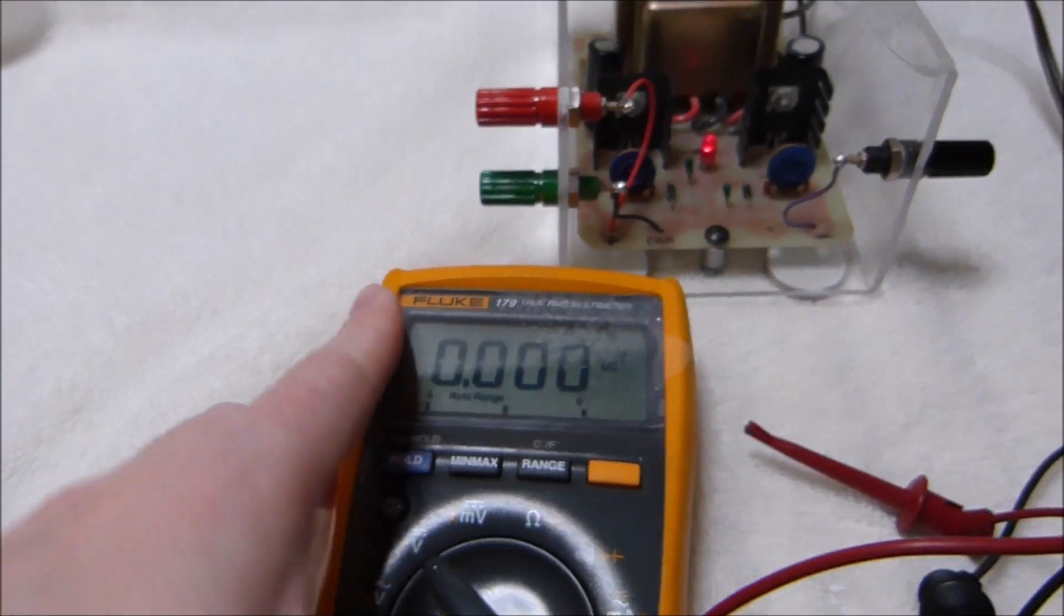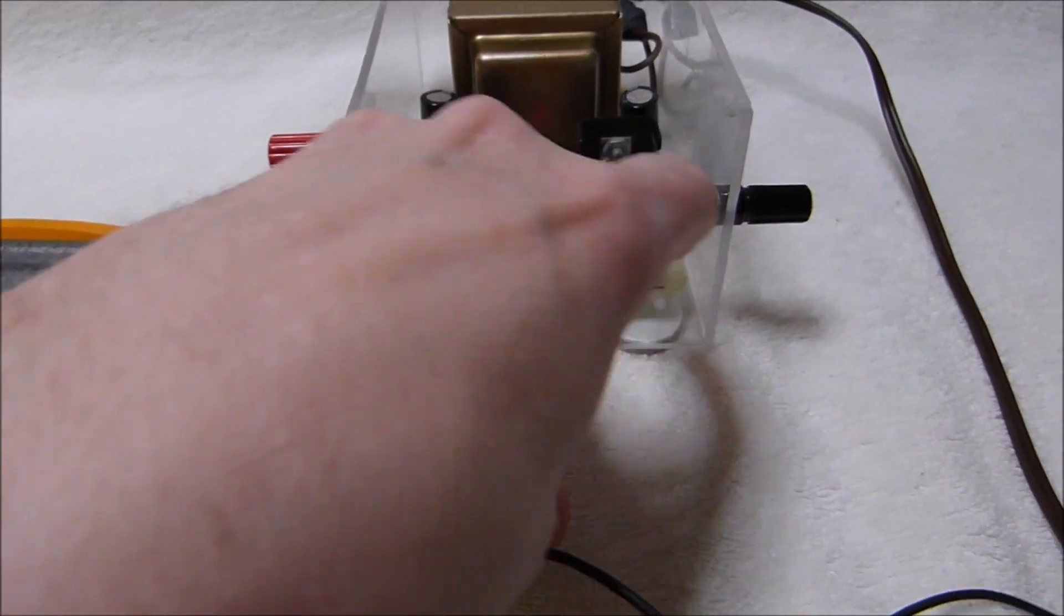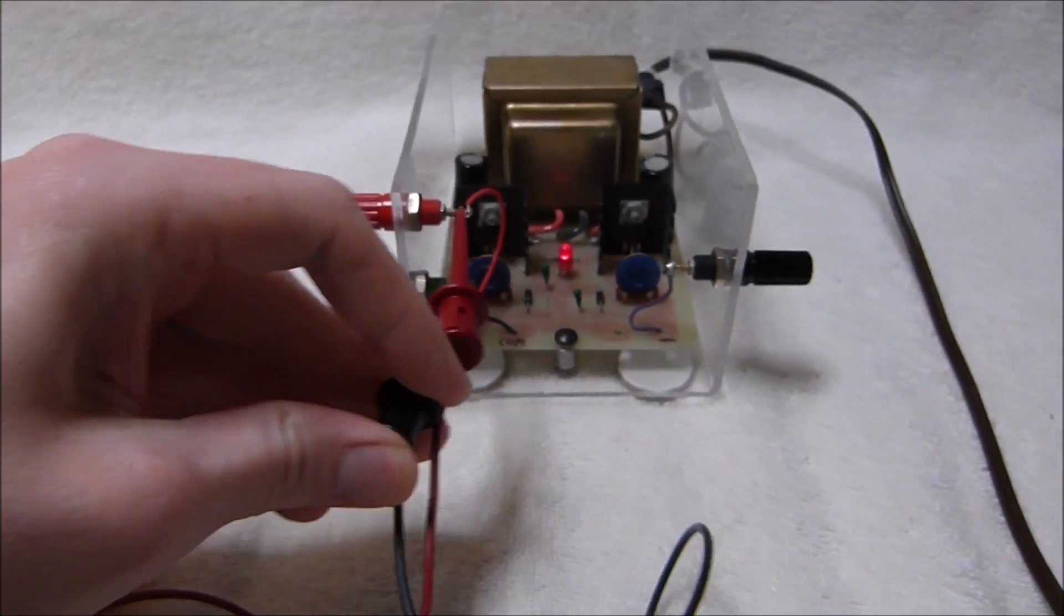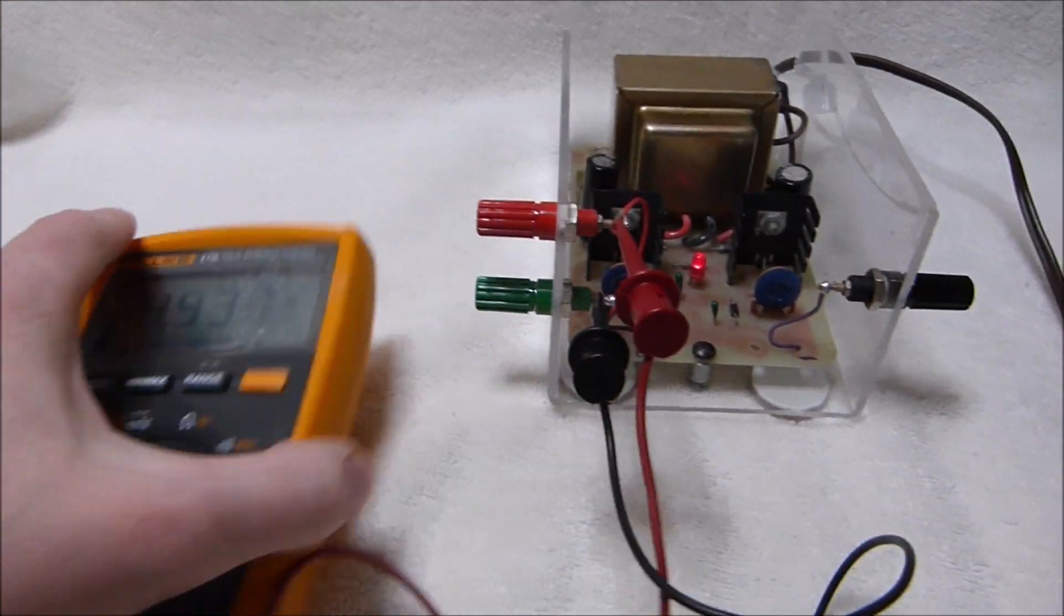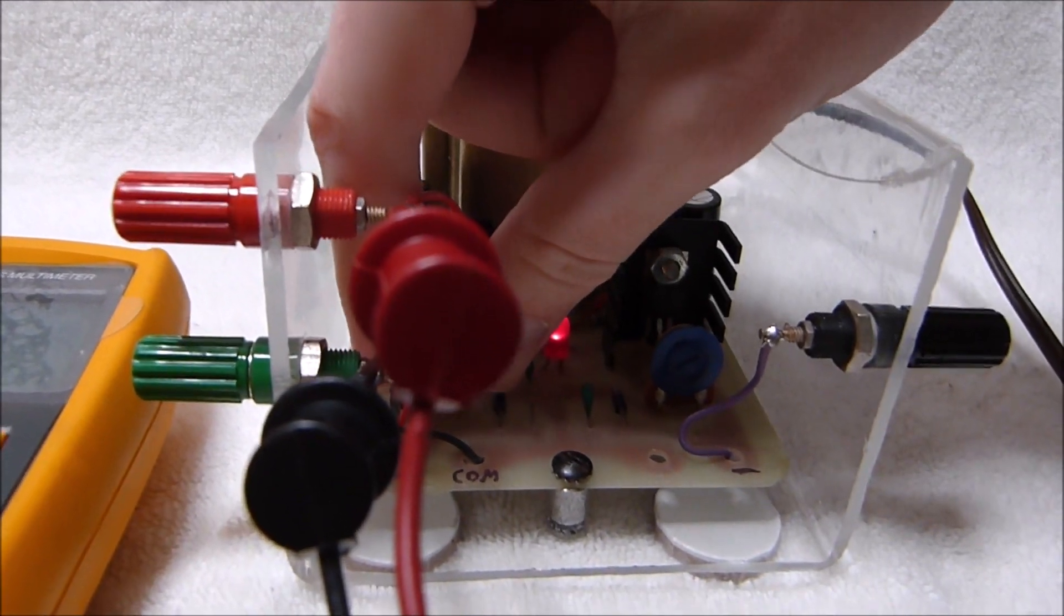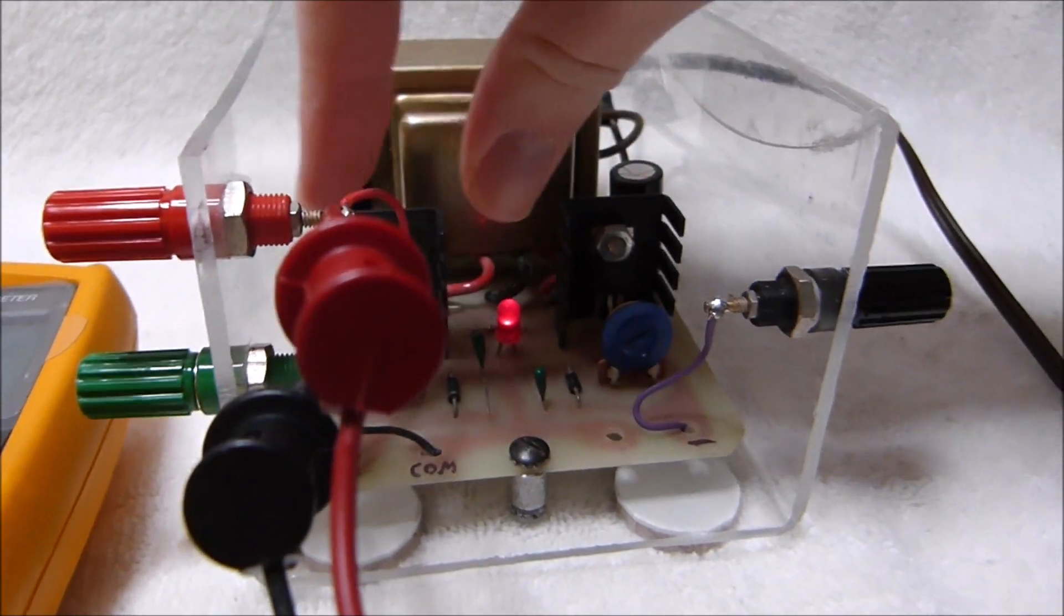So I've got my DVM here. I'll just hook it up to the positive supply first. And yes I know the plastic is still on there. You can adjust the voltage with this little potentiometer here.